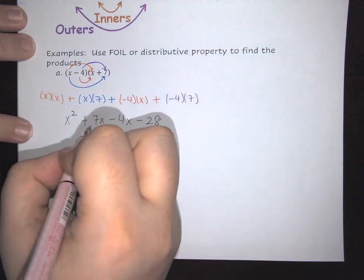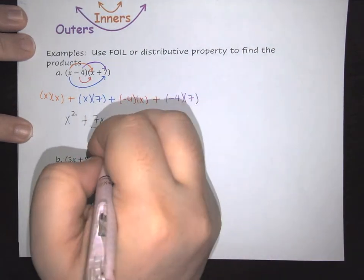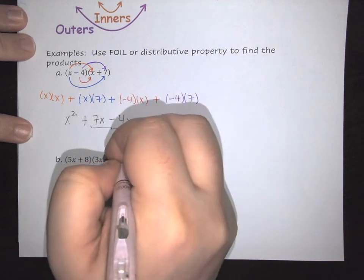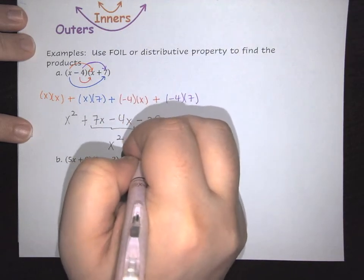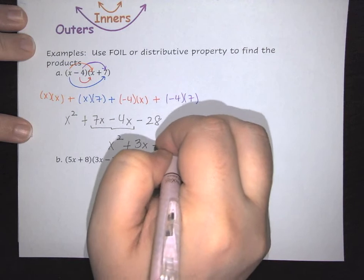We're going to combine your like terms together. So the end result becomes X squared plus 3X minus 28.